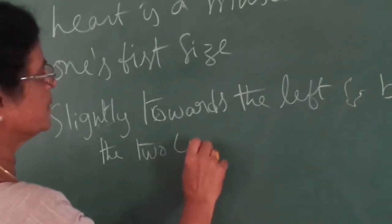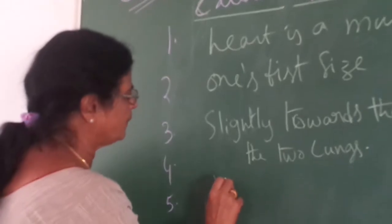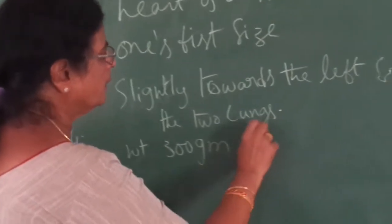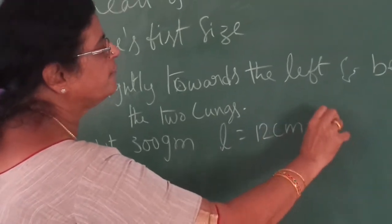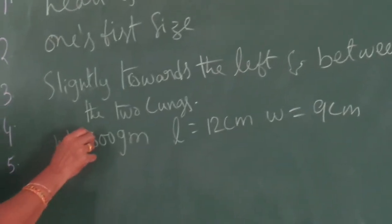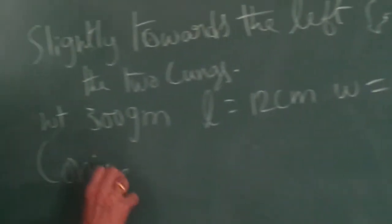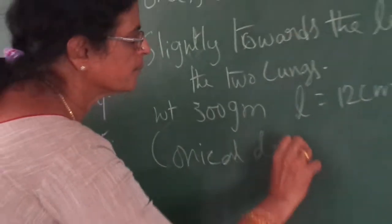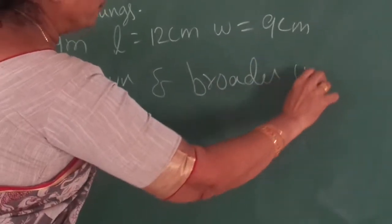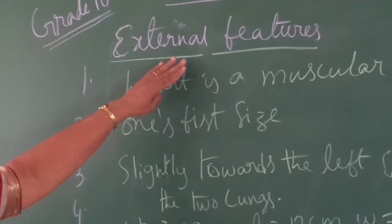This is the location. Normally, the weight will be approximately 300 grams, the length is 10 centimeters, and the width is 9 centimeters. These are the approximate measurements. The heart is conical down and broader up. These are roughly the external features of the human heart.